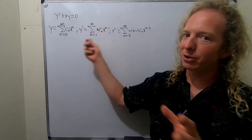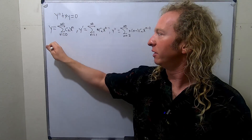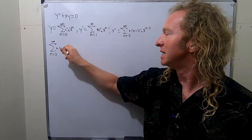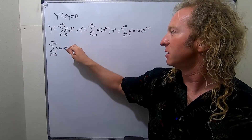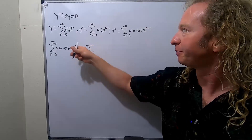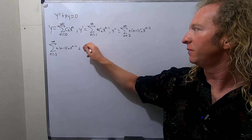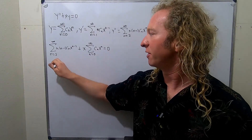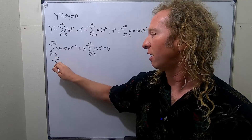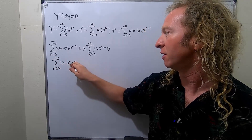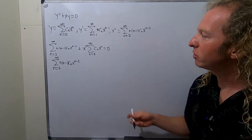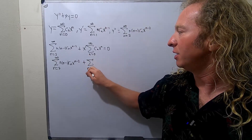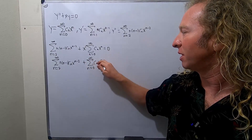The next thing you do is plug all of this into the equation. So y double prime gives us the infinite sum from n=2 to infinity of n(n−1)·c_n · x^(n−2), plus x times y. And then we have y, which starts at 0, so n equals 0 to infinity of c_n · x^n, and that's equal to 0. The next step is to distribute the x. There's an x¹ here; when you distribute that you get x^(n+1), so it becomes: plus the infinite sum from n=0 to infinity of c_n · x^(n+1) equals 0.